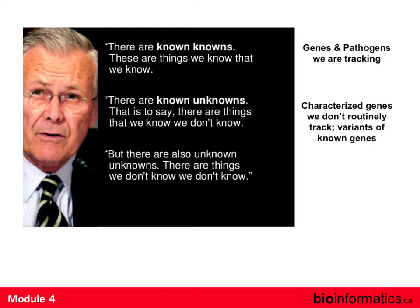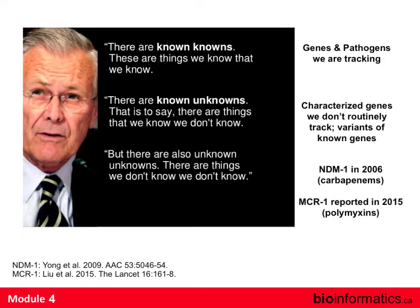We know there's sequence variants and we don't know how functional they are. There's lots we don't track — travel makes this an issue. Then there are the unknown unknowns — emergent threats coming out of water, soil, the environment, possibly working through agriculture before reaching the clinic. NDM-1 in 2006 took out carbapenems. In 2015, a gene called MCR-1 was reported from China — we now know from retroactive sequencing that it was in Canada as early as 2008. If you have MCR-1, you've lost colistin and polymyxins. Roughly three months ago in the U.S., a young woman had a plasmid with both NDM-1 and MCR-1 — it was untreatable and she died.